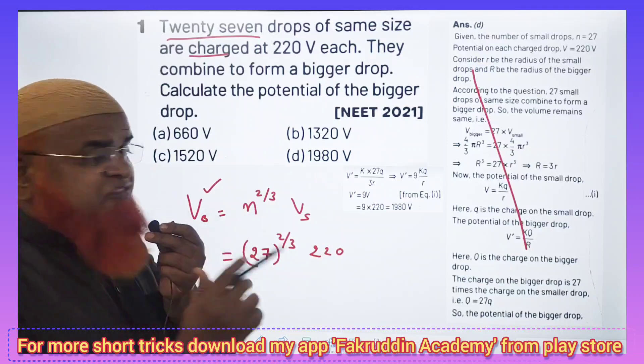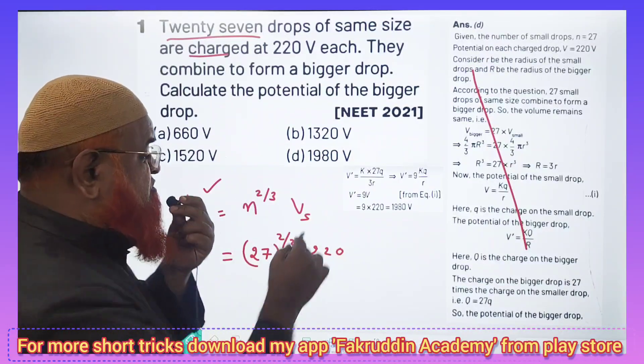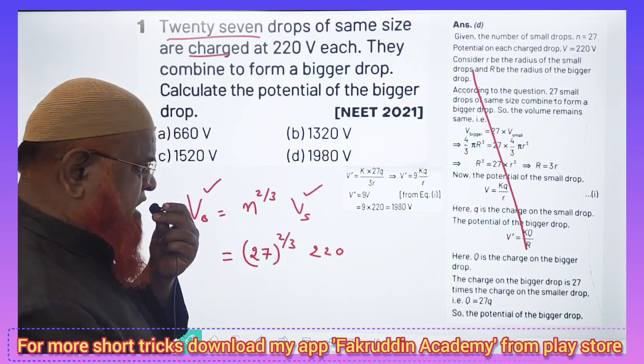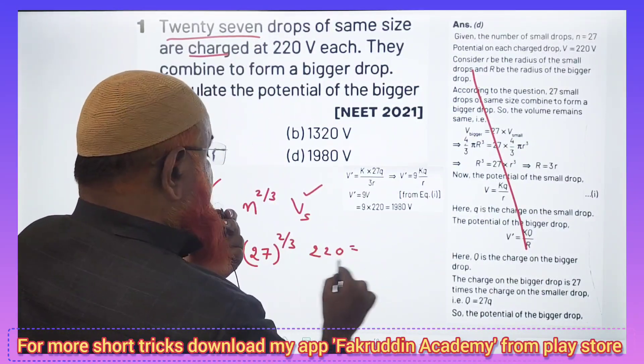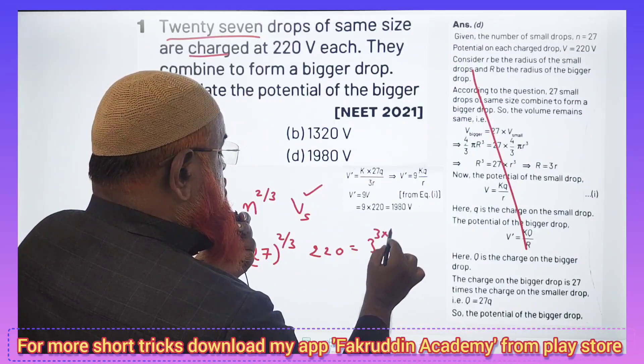Here, potential of a bigger drop is equal to m power of 2 by 3 times the potential of a smaller drop. So 27 power of 2 by 3 can be written like this: 3 cube power of 2 by 3, because 27 means 3 into 3 into 3.